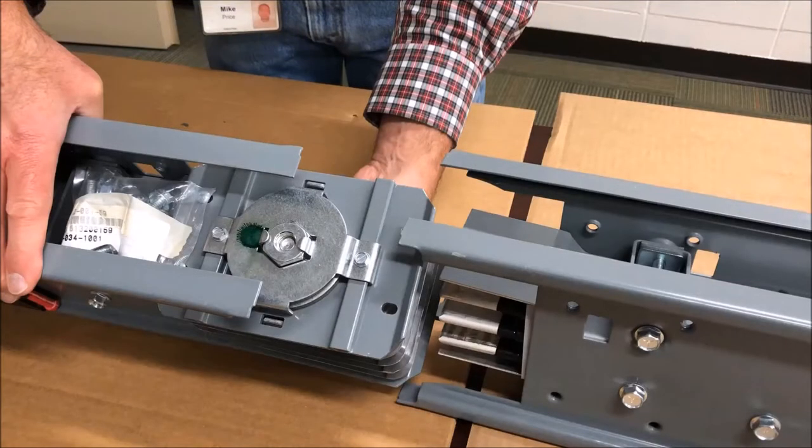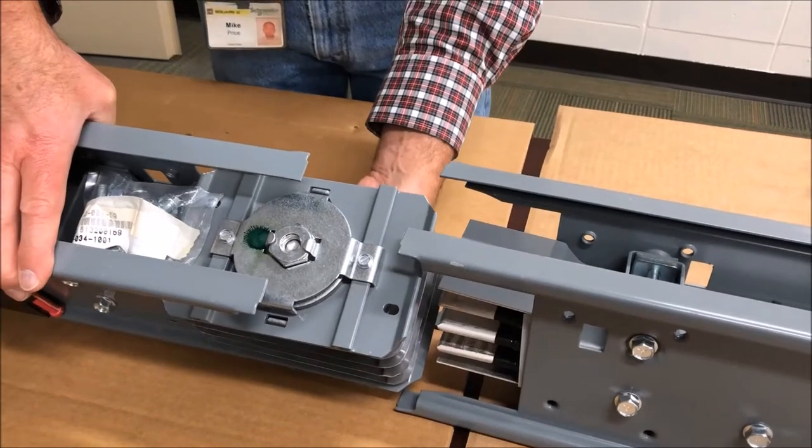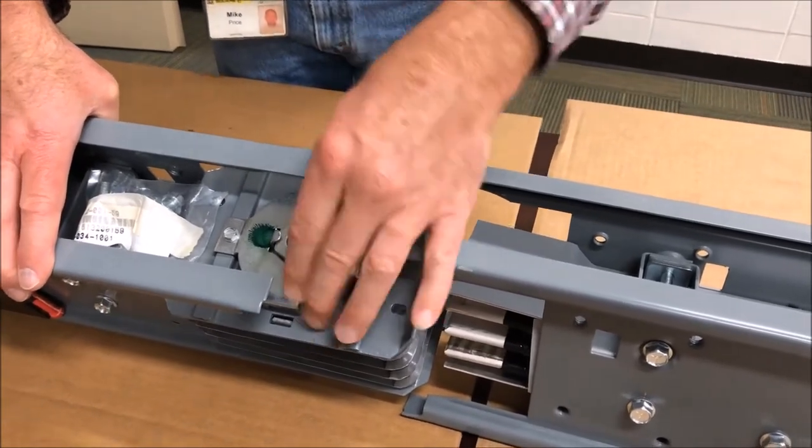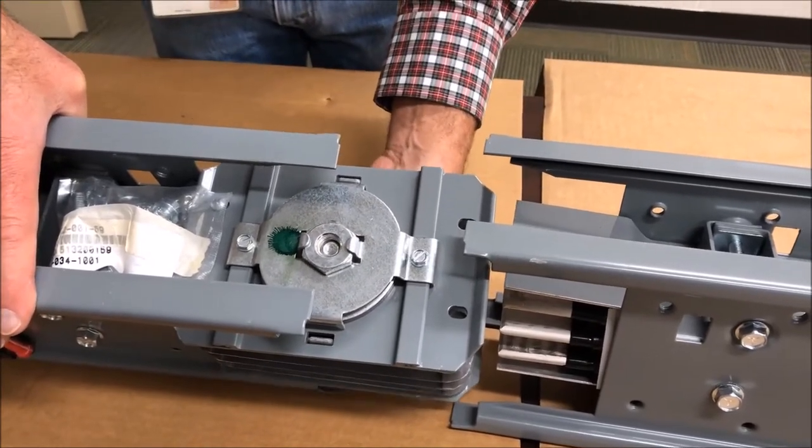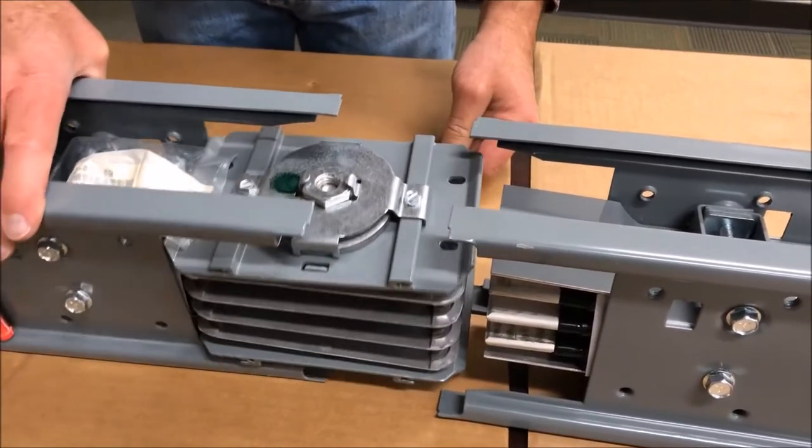Today we're going to talk about the 800 amp and above busway and how to install the joint pack assembly. First, we want to make sure the joint bolt is backed out far enough so the joint pack is loose, but not all the way out that it comes apart. This will help you slide the two busway pieces together.